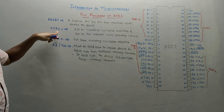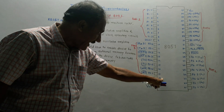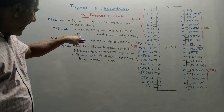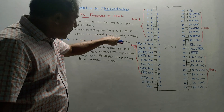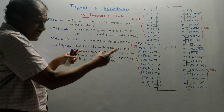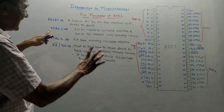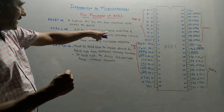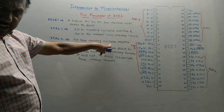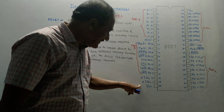XTAL basically stands for crystal. XTAL1 and XTAL2 are pin numbers 19 and 18 respectively. XTAL1 is the input to the inverting oscillator amplifier and input to the internal clock operating circuit. XTAL2 is the output from the inverting oscillator amplifier. You can connect a crystal oscillator between pin numbers 18 and 19, that is XTAL1 and XTAL2.